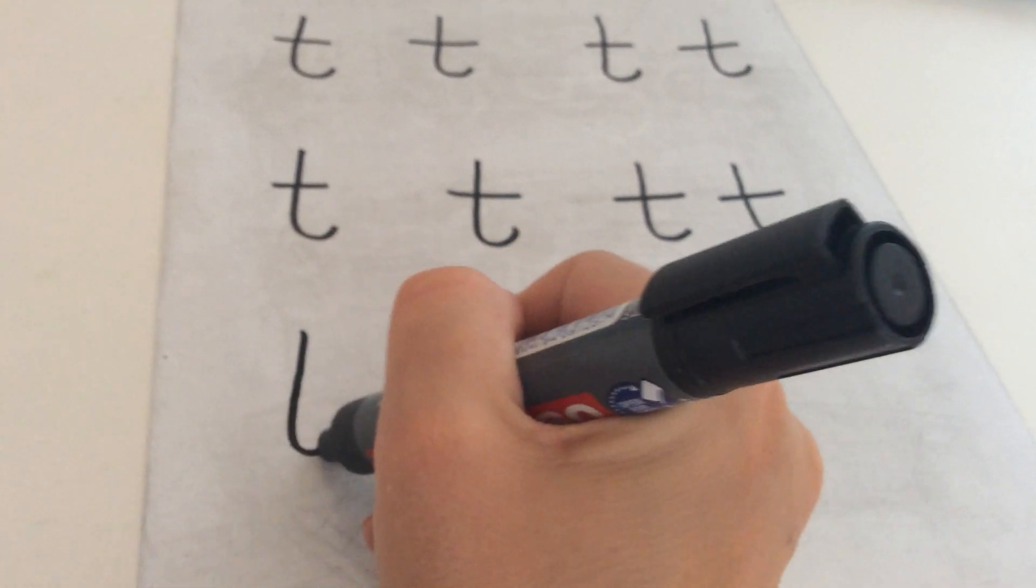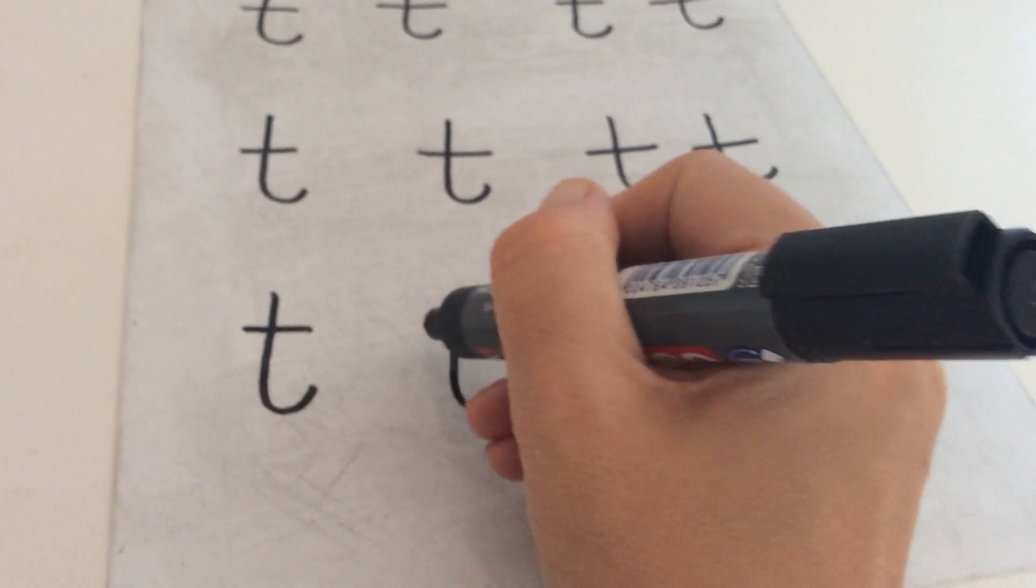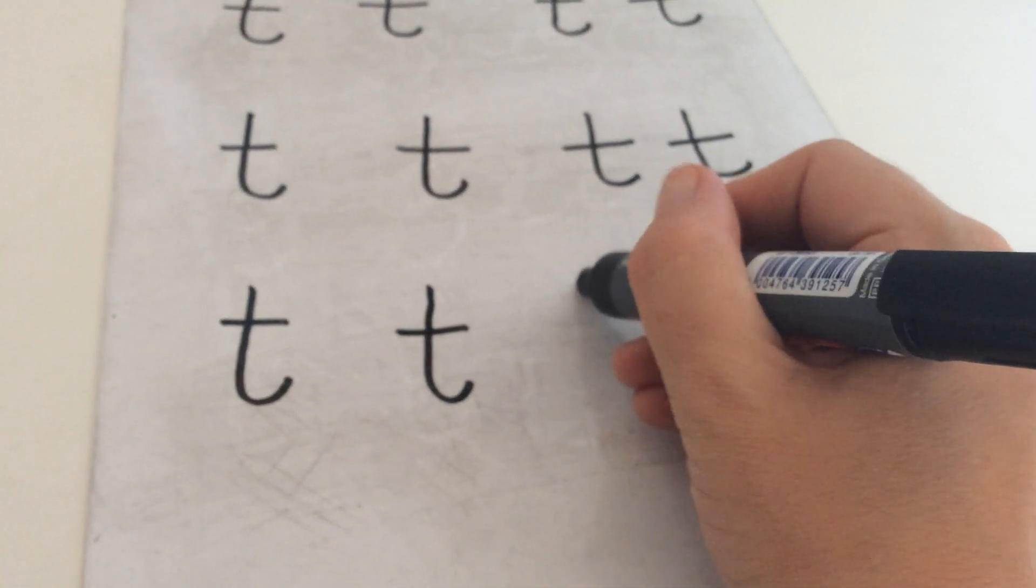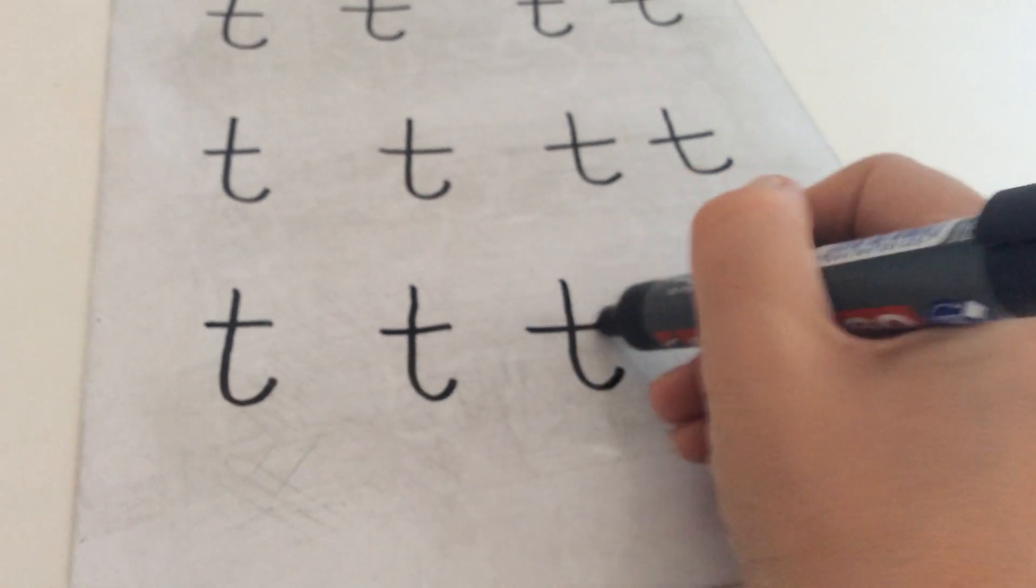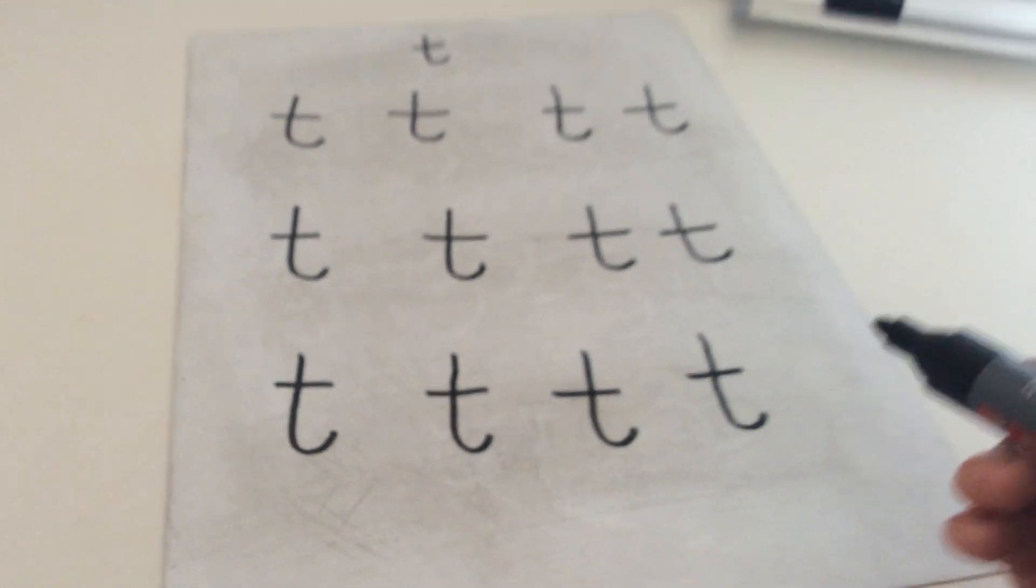So we're going to go down the back and round and cross through. Down the back, flick round, cross through. Down the back, curl round, flick through. Down his back, curl round, flick through.